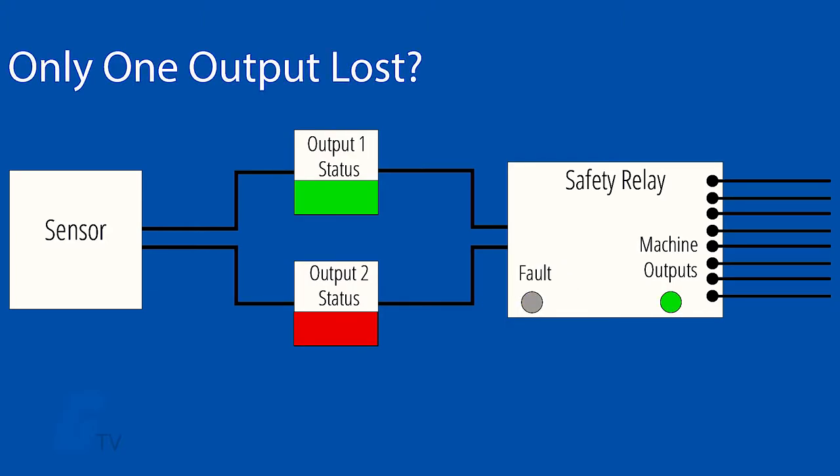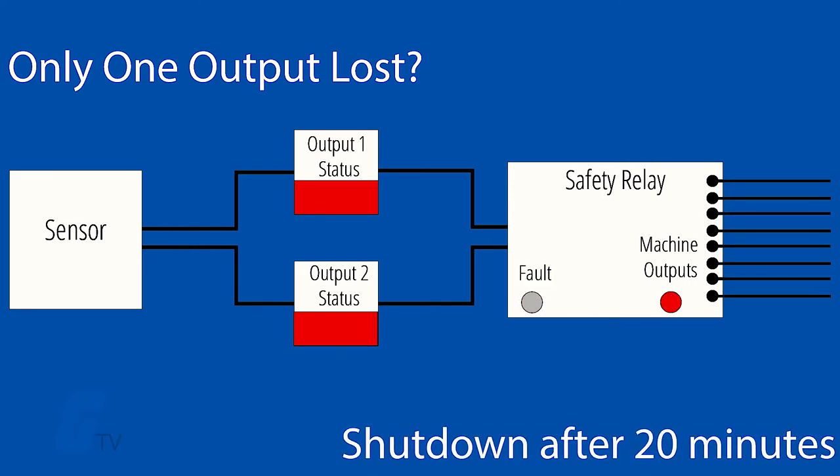However, if only one output is lost due to a fault or wiring issue, then the sensor will indicate the condition with a flashing code and transmit the information via the daisy chain diagnostic system, if available. The machine will then shut down after 20 minutes in this condition, if not resolved.